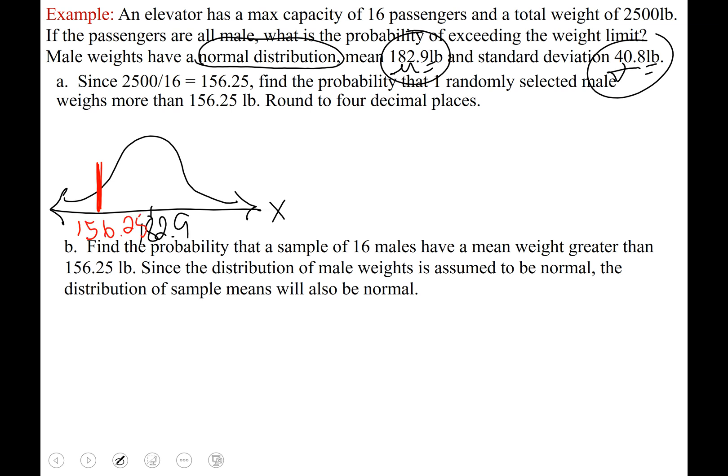So here's our 156.25 pounds, we're checking the probability that a male weighs greater than that so we shade to the right. We're interested in this area right here because that area will be the probability. And in that case which program do we run, inverse norm or normal cdf? If you chose normal cdf you were correct.